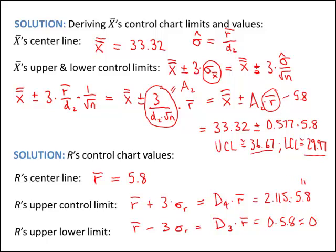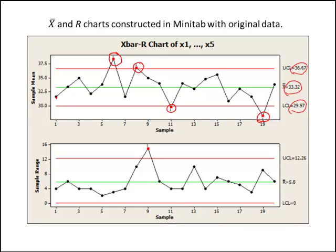The upper control limit for the R chart: 2.115 times 5.8 gives approximately 12.27. These values should match the control chart limits from Minitab. On the R chart, the center line is 5.8, the upper control limit is 12.26 — a small rounding difference from my calculation — and the lower control limit is 0. There is one out-of-control point on the R chart.